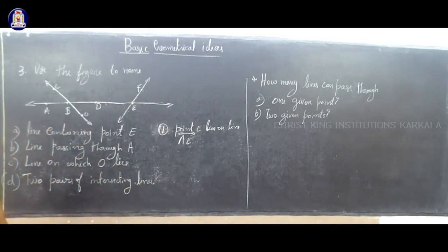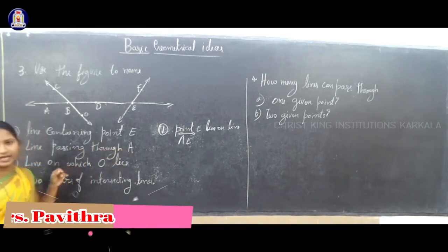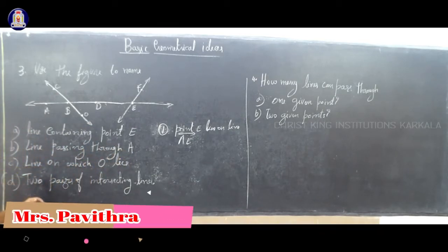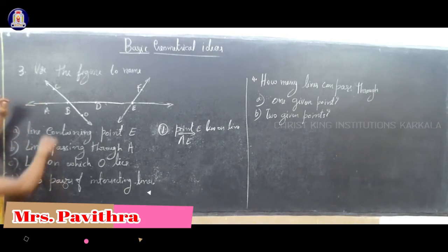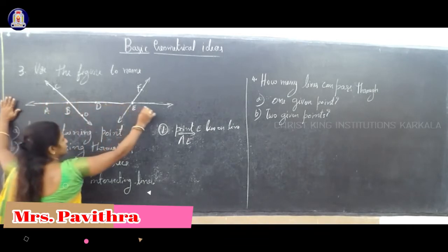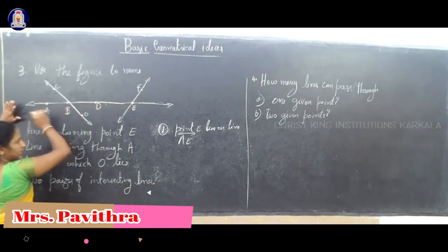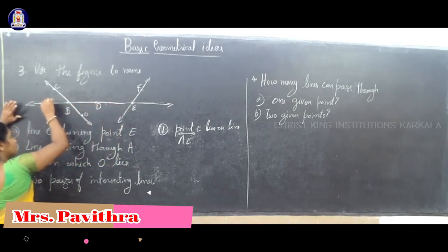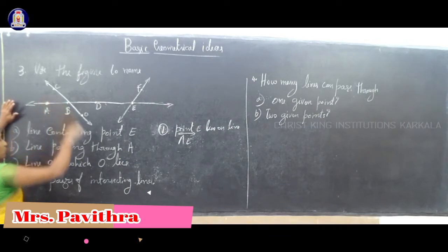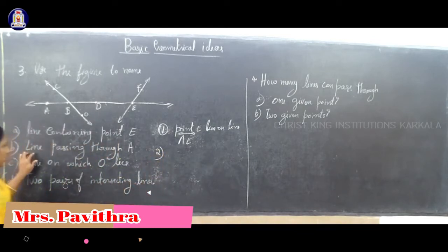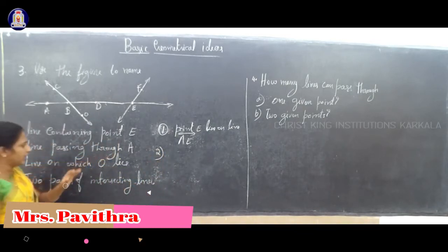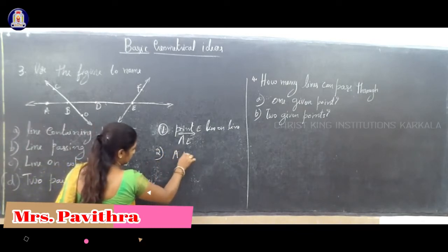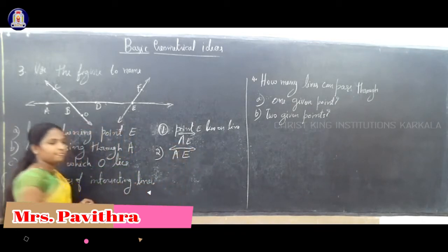Point E lies on line AE. Second question: line passing through A. The point A is here. Which line is passing through A? This line is also the AE line. On line AB we can see point A. So the second answer is: the line passing through A is line AE.